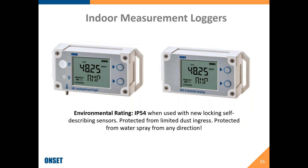These are two of our newest Bluetooth indoor data loggers. They do have an environmental rating of IP54, which means they are protected from limited dust ingress — more robust in an environmental or industrial type application, even if they're getting a bit sprayed down. These can accommodate temperature relative humidity light sensors, AC current, AC amperage, additional temperature sensors, and temperature sensors that could be put on a pipe for the supply and return on equipment.